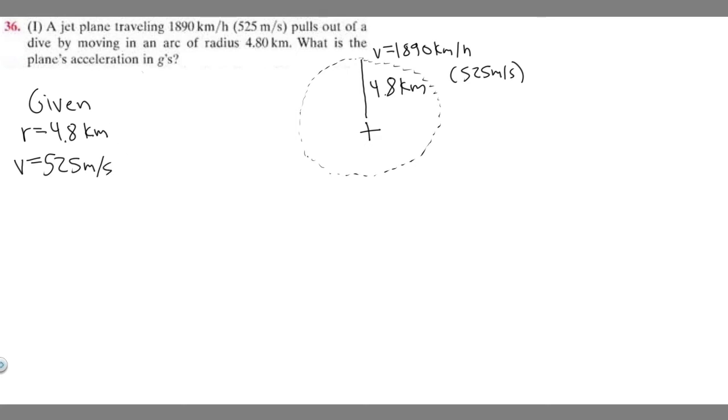And so what we're going to do is try and find the plane's acceleration, the centripetal acceleration, and we call that a_c. And so there's a formula you can use to solve for this. It's a_c is going to be equal to v squared over r.